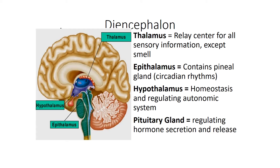The thalamus is going to be paired masses of gray matter, and they are important for promoting arousal from sleep and alertness. This is the relay center for all sensory information except for smell — everything but smell is going to go through the thalamus.